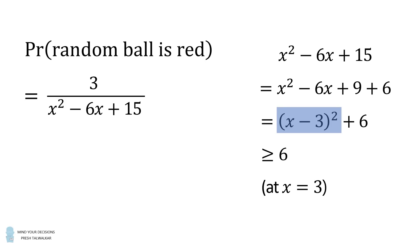Now let's go back to the probability. We know that the denominator is greater than or equal to 6, and it's at its minimum value when x is equal to 3. When the denominator is at its minimum, that's when the probability is at its maximum, because we're dividing by the minimum number.